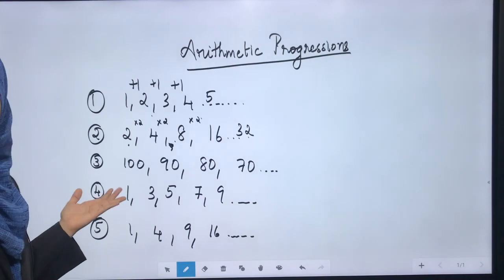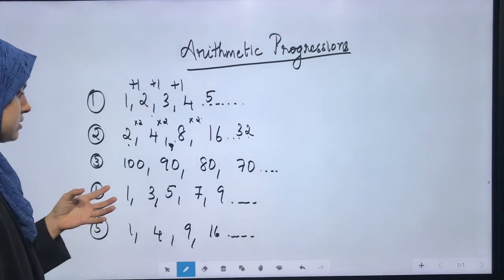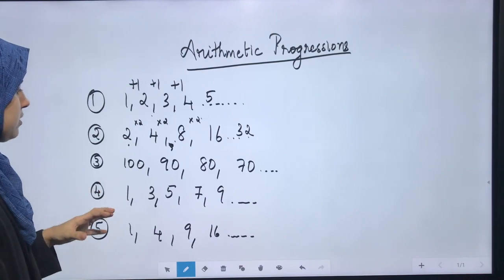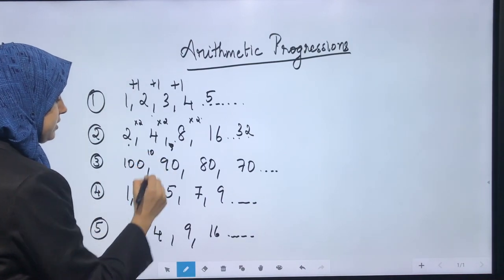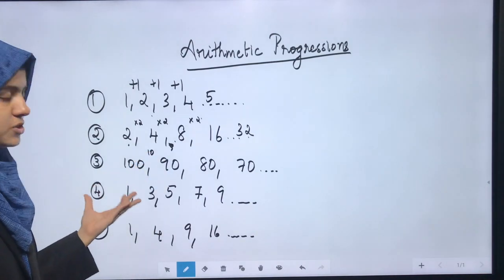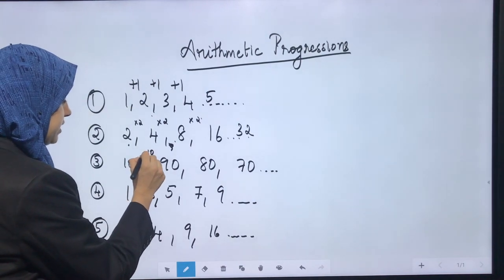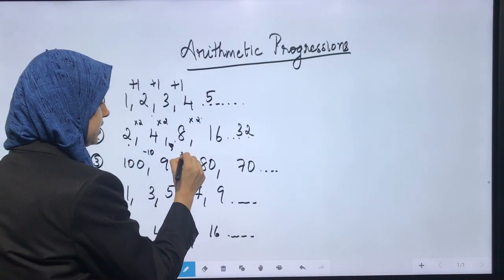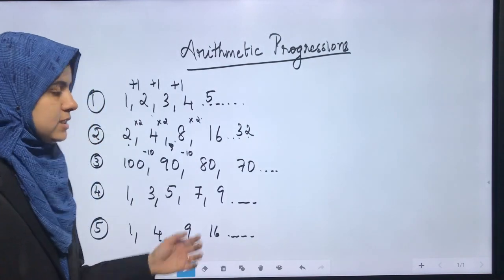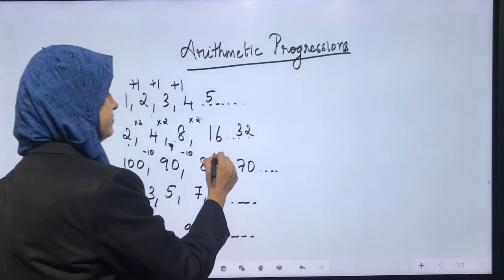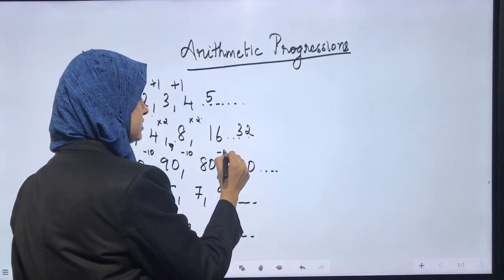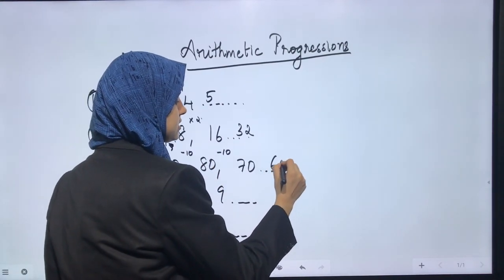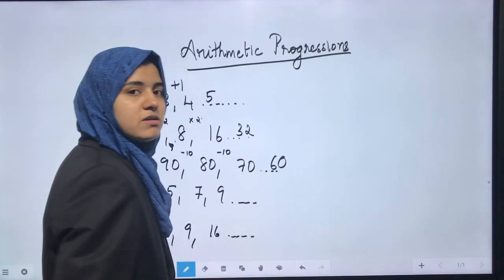The third example involves subtracting 10 from the preceding term. So 100 minus 10 is 90, 90 minus 10 is 80, 80 minus 10 is 70, and 70 minus 10 gives us 60 as the next term.